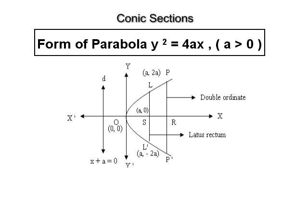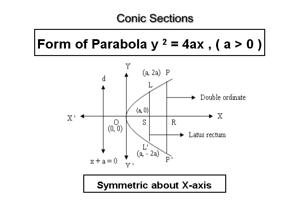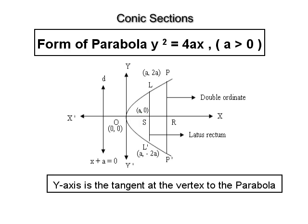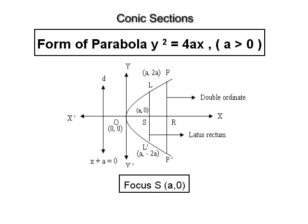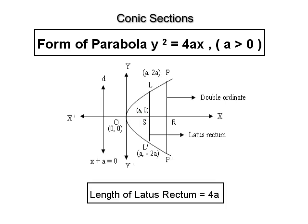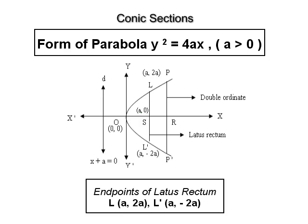For the parabola y² = 4ax where a > 0: it is symmetric about the x-axis, which is the axis of symmetry. The vertex of the parabola is at the origin (0, 0). The y-axis is the tangent at the vertex. The focus is S(a, 0), and the directrix is x + a = 0. No part of the parabola lies in the 2nd and 3rd quadrants; it lies wholly to the right of the y-axis. The length of the latus rectum is 4a, and the endpoints of the latus rectum are L(a, 2a) and L'(a, −2a).